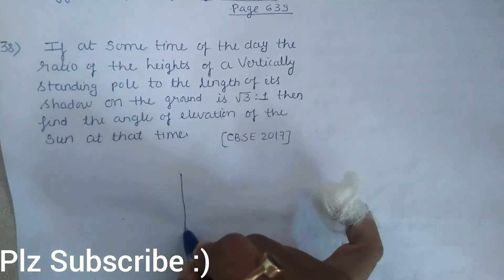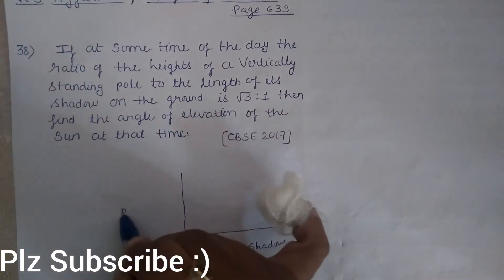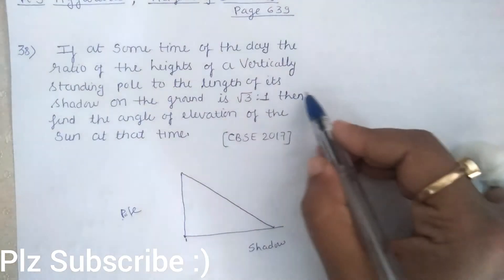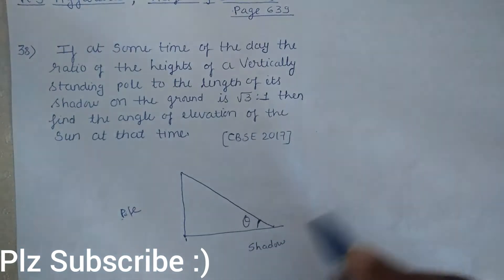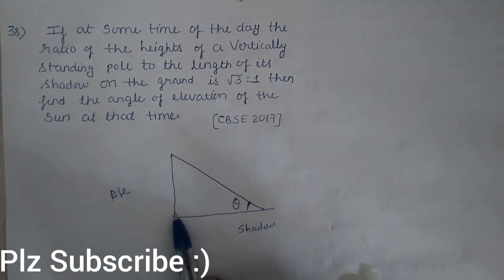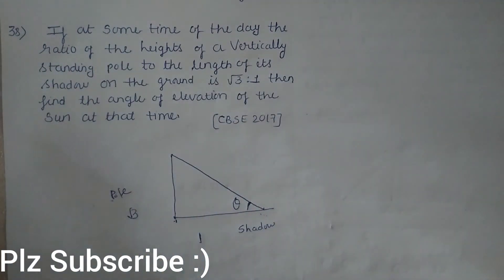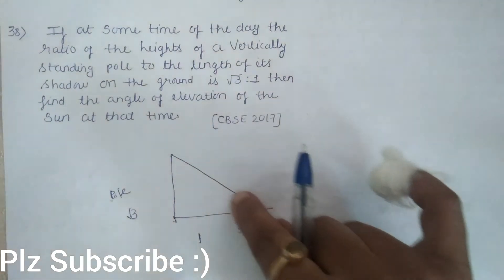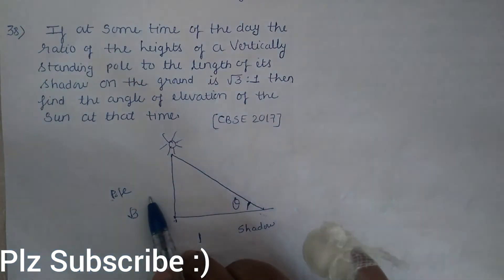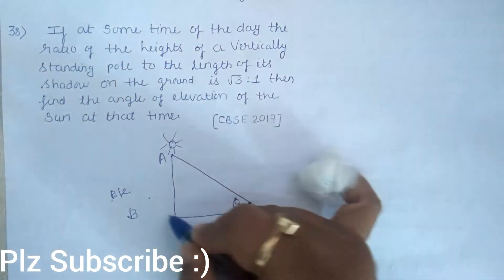Question number 38: If at some time of the day the ratio of the height of a vertically standing pole to the length of its shadow on the ground is root three to one, then find the angle of elevation of the sun at that time. We are told that at some time the ratio of the pole's height to its shadow length is root three to one, and we need to find the angle of elevation of the sun.